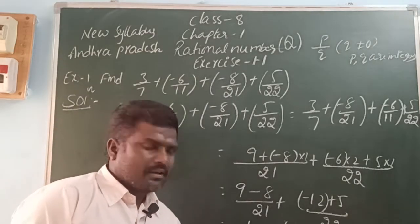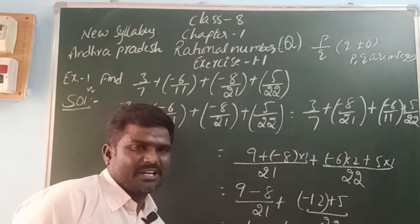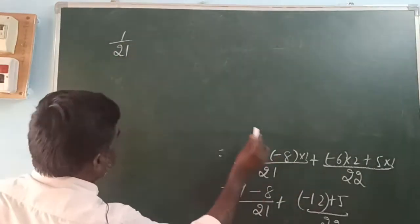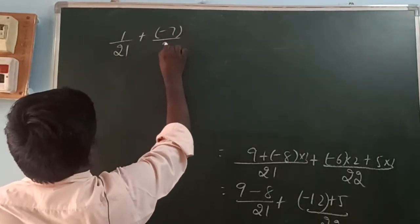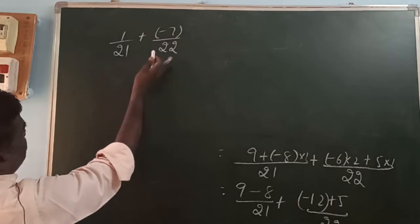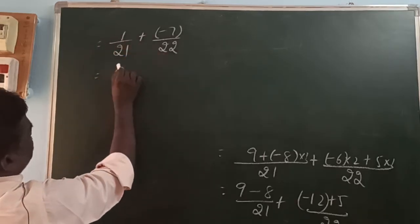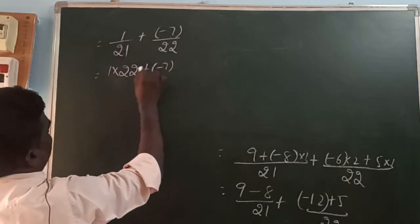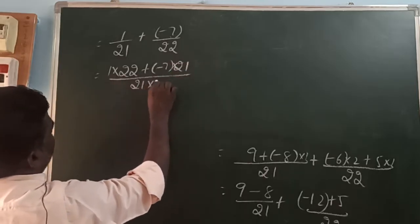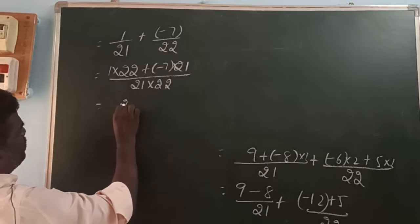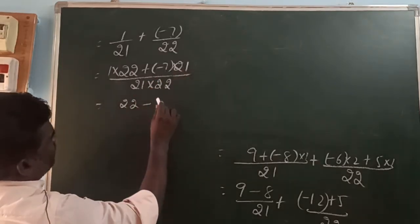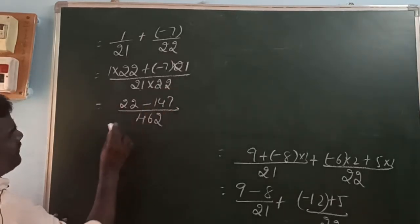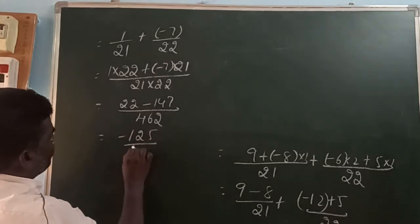Now these two fractions — 1/21 and (-7)/22 — we do cross multiplication: 1×22 = 22, minus (-7)×21 = -147, all over 21×22 = 462. So 22 minus (-147) = 22 + 147... that gives us 22 - 147 = -125 by 462. So the value of the given expression is -125/462.